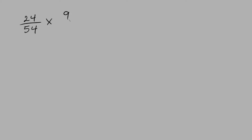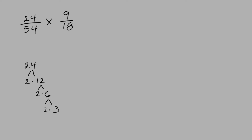Let's try one last example. Let's say you had 24 over 54 multiplied by 9 over 18. One thing you can do is break down each of the numbers to its prime factorization. We'll take the 24 and break it down into 2 times 12, then 12 into 2 times 6, and 6 into 2 times 3. So the prime factorization of 24 is 2 times 2 times 2 times 3.